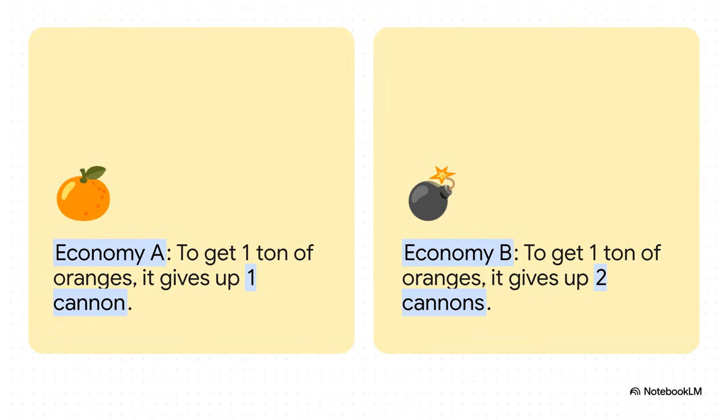All right, let's crunch the numbers, focusing on the cost of making oranges. For economy A, it's pretty simple. To make their five tons of oranges, they give up five cannons. So for every one ton of oranges, the cost is one cannon, a one-for-one trade-off.